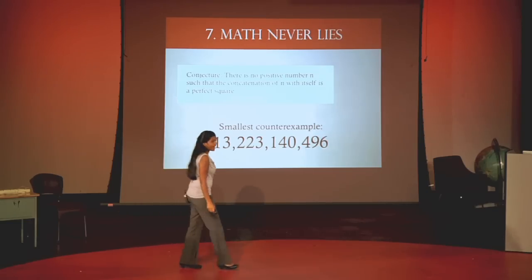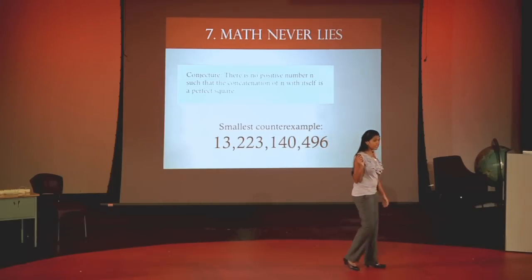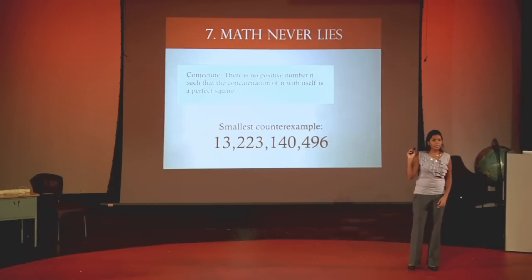Number seven, math never lies. The previous conjecture that I just stated has been verified for all numbers up to 10 to the 18th power. So why do we bother proving it in general? Well, consider the following conjecture. Take any number and then write its digits out again so that you get a number which is twice in size. That number is never a perfect square, or so people thought until they came across the number 13 billion, 223 million, 140,496. You can never be certain until you have a proof. And math is unique in that it is 100% certain.